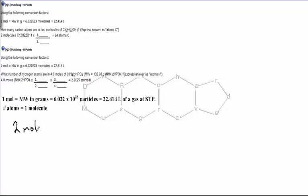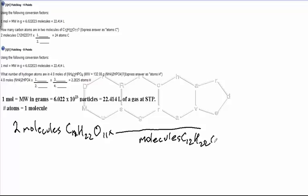Alright, so we're going to start off with two molecules C12H22O11, and we know that molecules will go on the bottom. The reason for that is because it has to cancel with the molecules up here. So molecules C12H22O11.